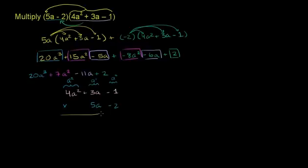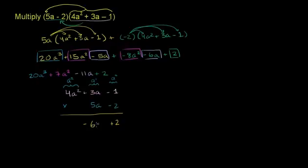Let's multiply negative 2 by the entire trinomial first. Negative 2 times negative 1 is positive 2, written in the a to the 0 space. Negative 2 times 3a is negative 6a, written in the a to the first power place. Then negative 2 times 4a squared is negative 8a squared. This is the result of negative 2 multiplied by the entire trinomial.